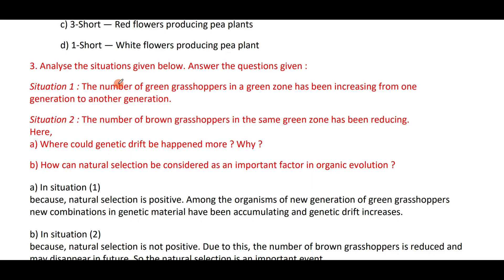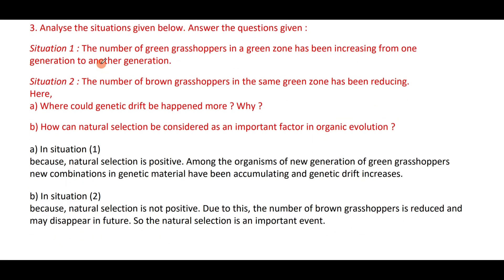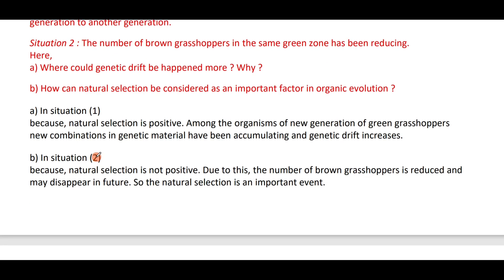Analyze the following situation: the number of green grasshoppers in a green zone has been increasing from one generation to the next because natural selection favors them — new genetic combinations may have been accumulating and genetic drift increases. In situation 2, the number of brown grasshoppers in the same region has been reducing because natural selection does not favor them. Due to this, the number of brown grasshoppers is reducing and they may disappear in the future. Natural selection is therefore an important event.